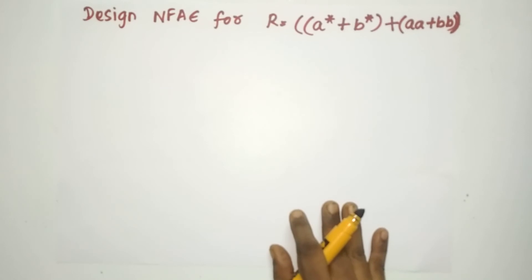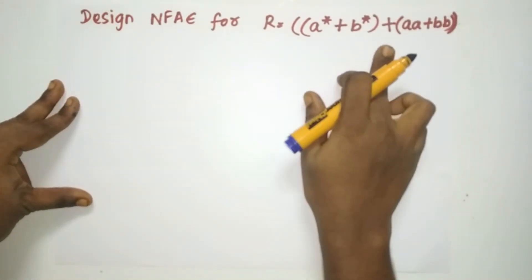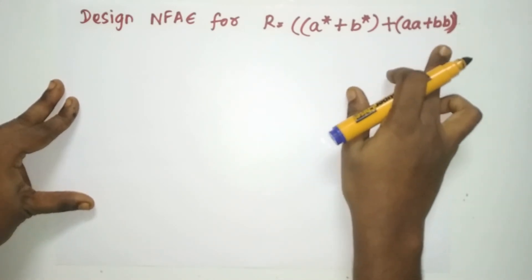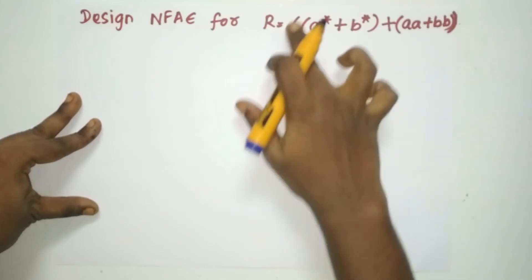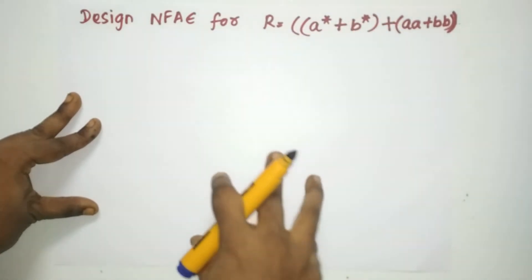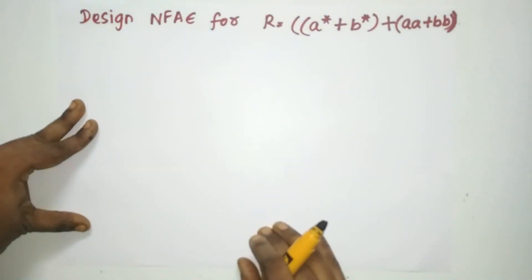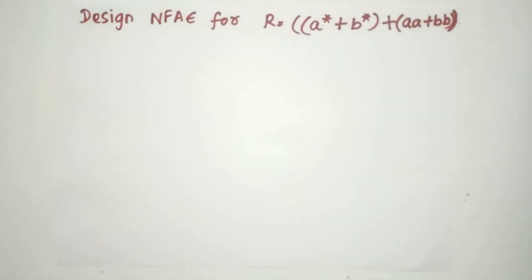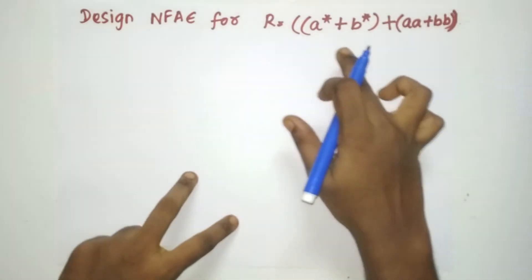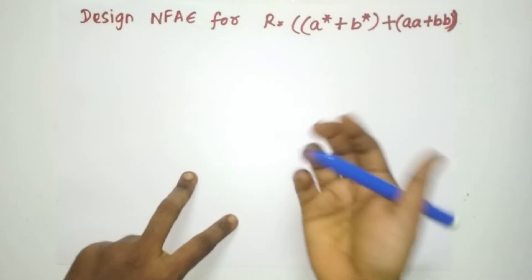Now let us see one more example with more complex operators. This expression is R = A*+B* + AA+BB. Here, A*+B* is entirely R1, and AA+BB is entirely R2. R1 will go on the top and AA+BB on the bottom, and we apply union between them. You must pre-plan the whole structure before creating the entire automaton. Start by creating A*, which goes on top, with A*+B* again on the top level.